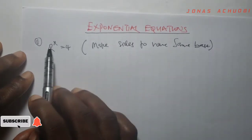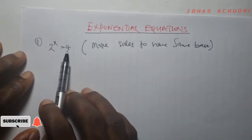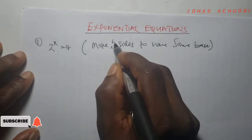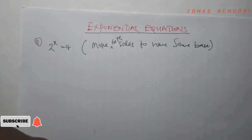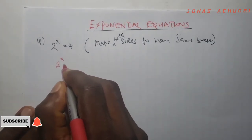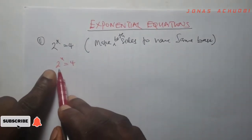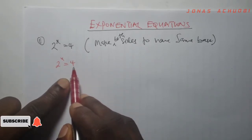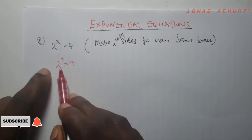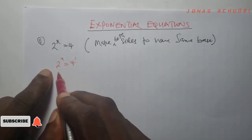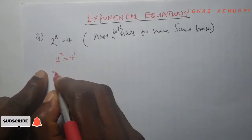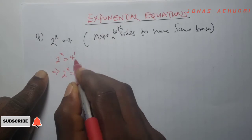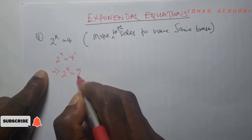In the case where your equation involves just two terms like this, the step is to make both sides have the same base. So here I have 2 raised to the power x and 4. The base on the left hand side is 2, while the base on the right hand side is 4. Since 4 is 4 raised to the power 1, can I make both have the same base? Yes, because I can write 4 to have base 2. So I can write this as 2 raised to the power x equal to 2 raised to the power 2.